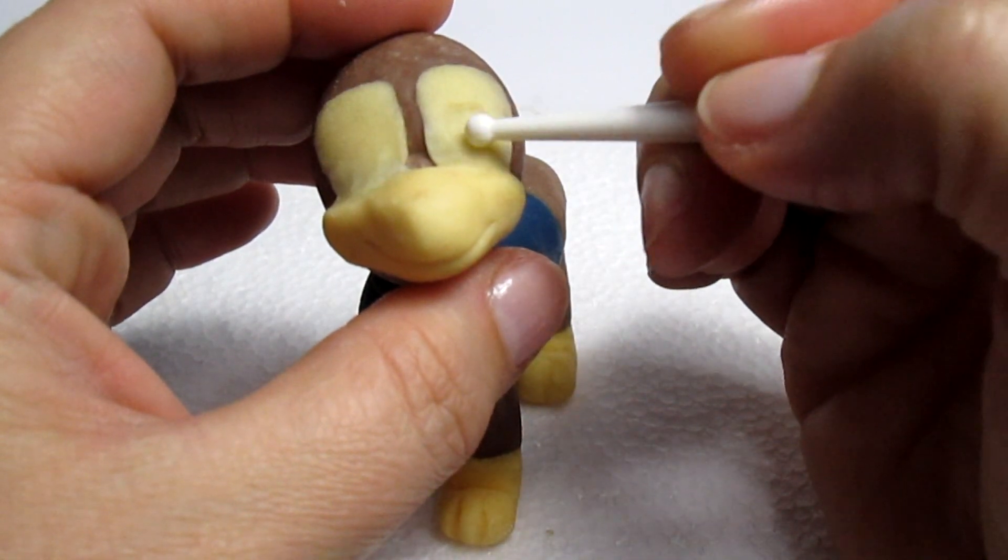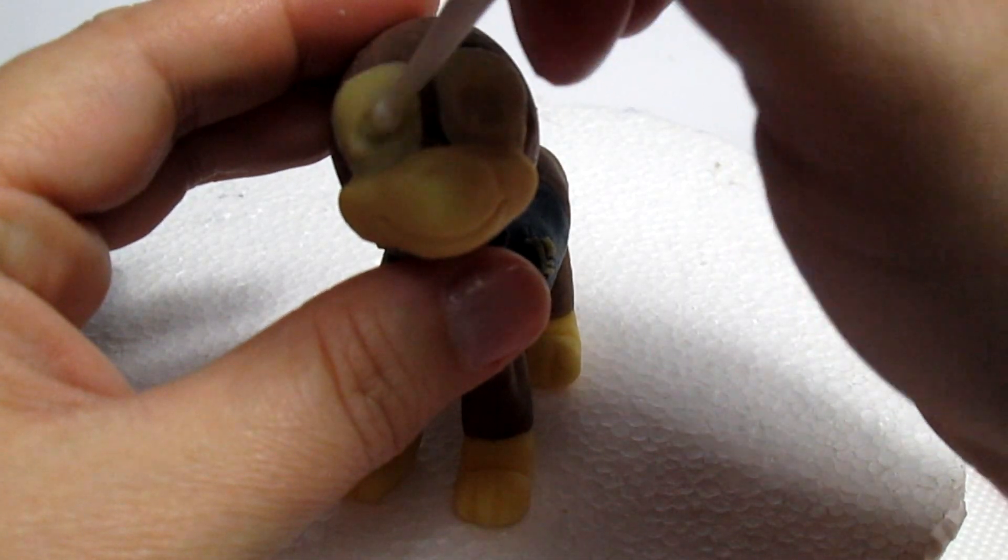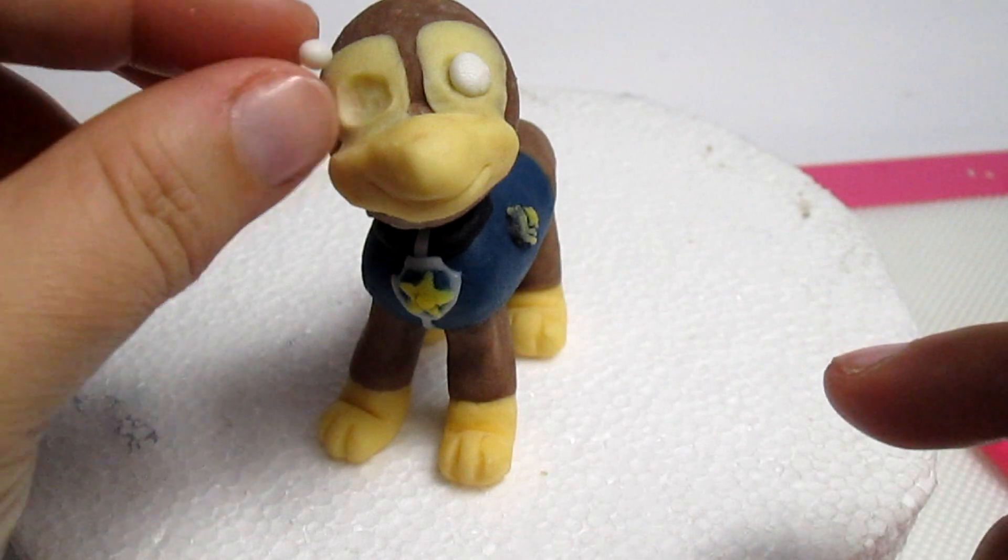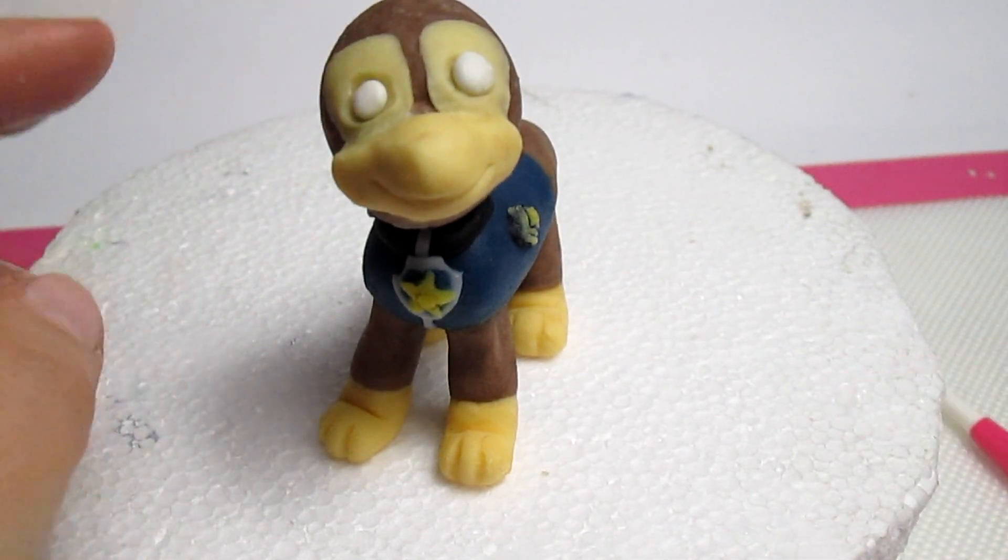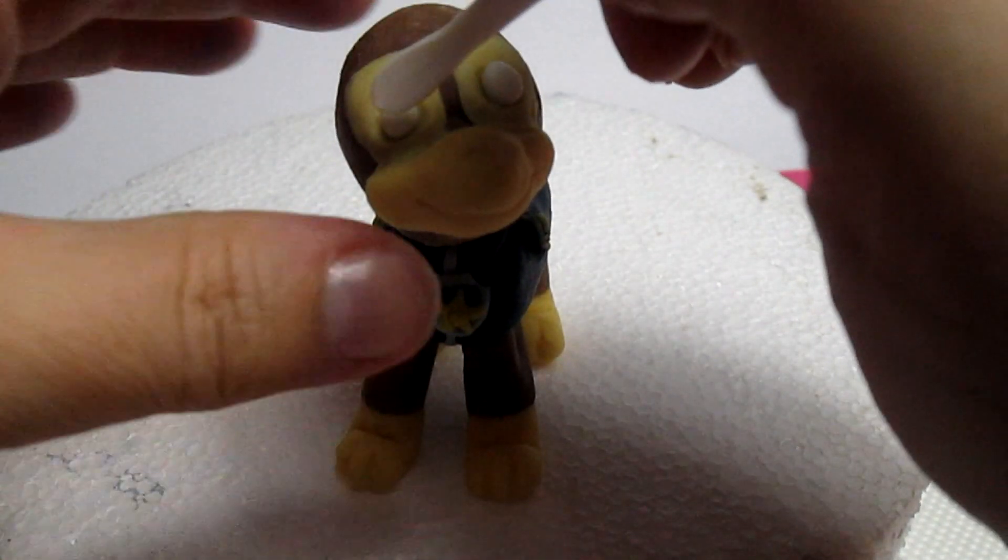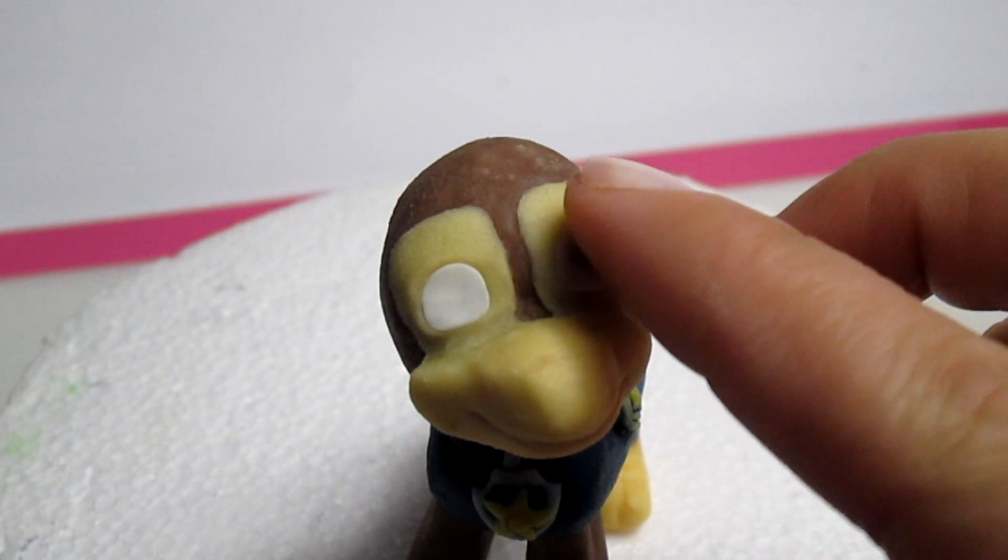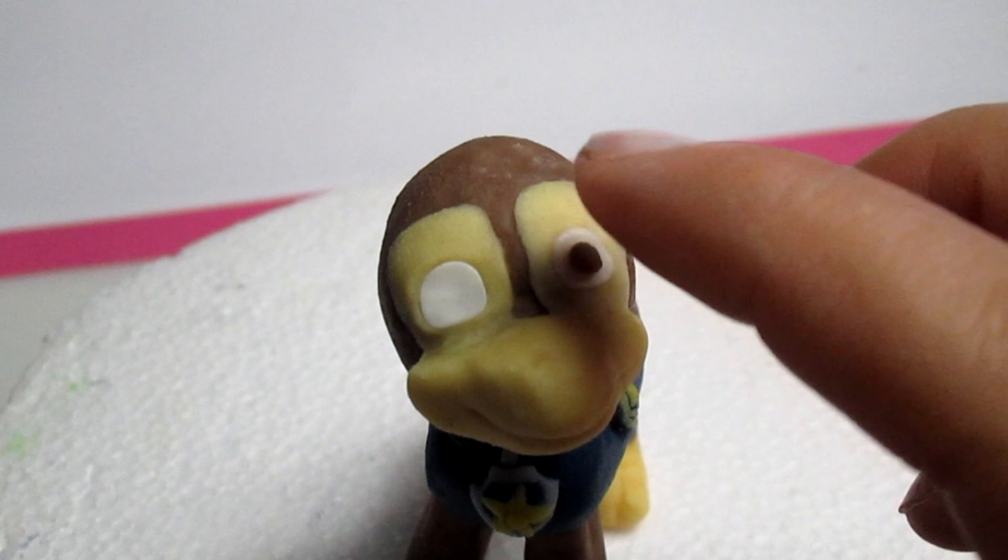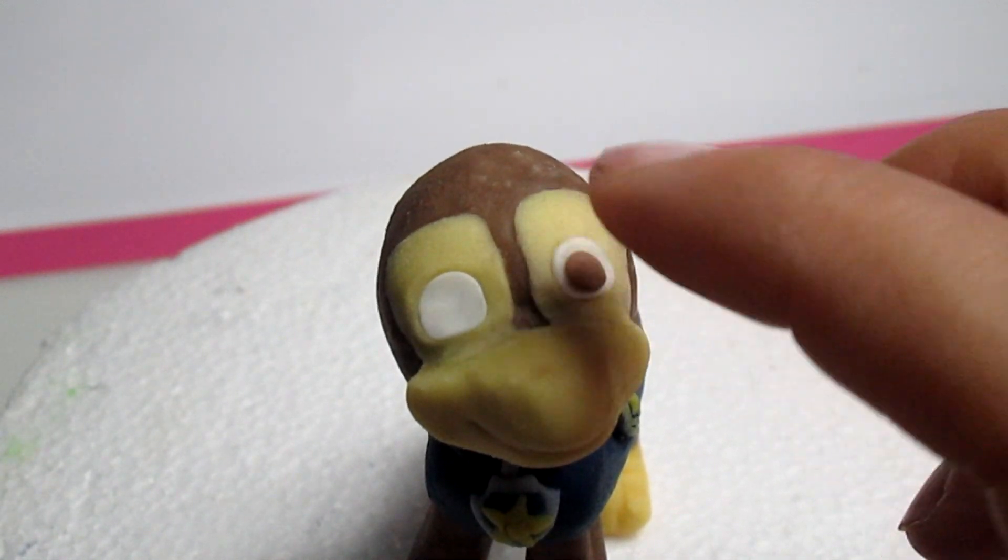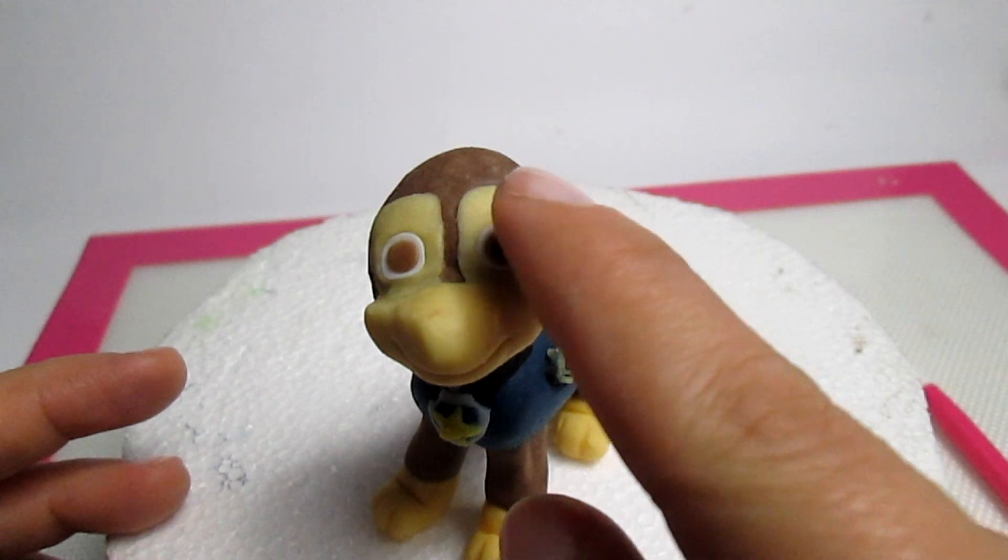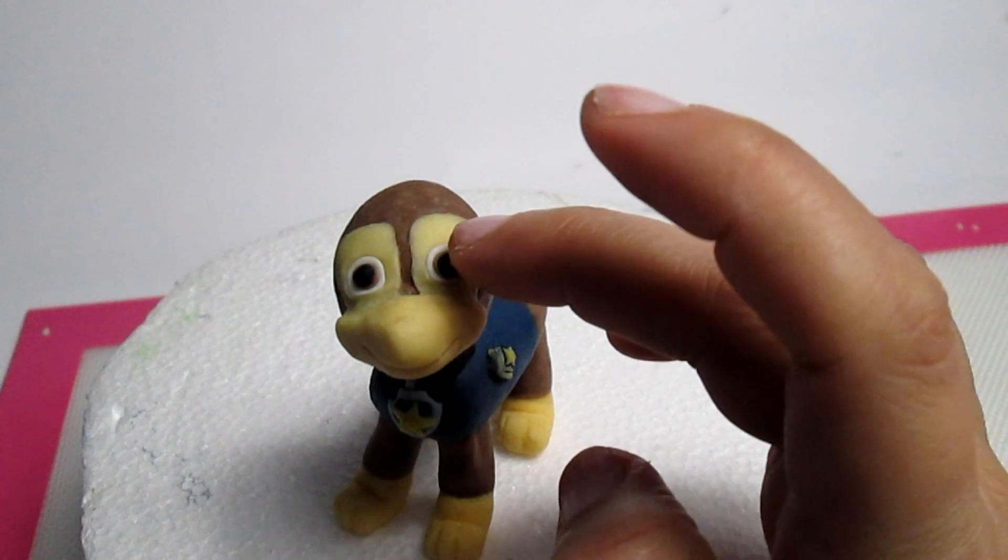With the ball tool, I'm making the holes where the eyes are going to be and then apply some white fondant. I'm pressing, trying to give it the same shape as the eyes. Then for the irises, I'm going to add some brown fondant, and then for the pupil some black, and just a hint of white fondant for the lights that Chase has in his eyes.